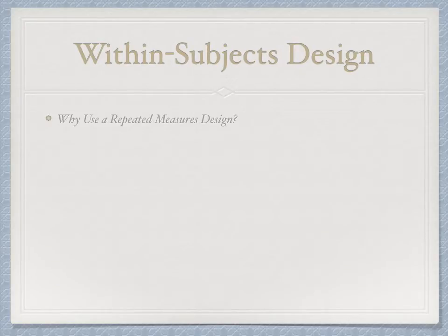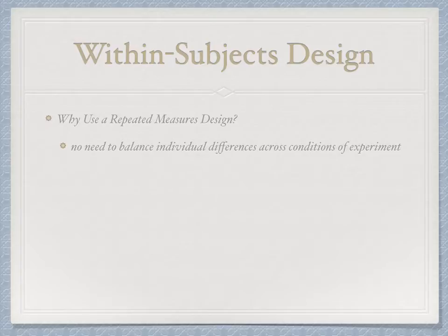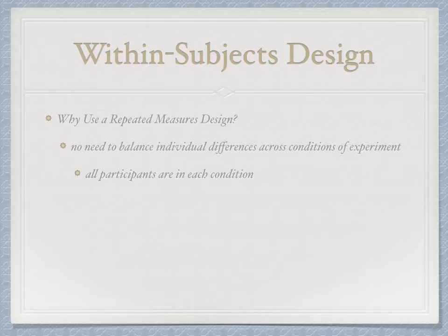Why do we do this instead of a Between Subjects Design? We lose the issue of individual differences — we no longer have to worry about balancing them across conditions because everybody participates in all conditions. We don't need to worry about randomization or matching participants, because whatever variability exists for treatment group one is the same for groups two and three since it's the same people. This creates much less noise, eliminating variability due to individual differences and greatly improving our signal-to-noise ratio.